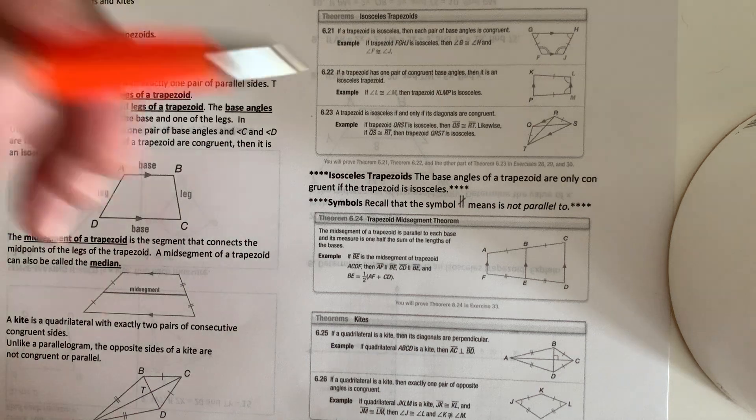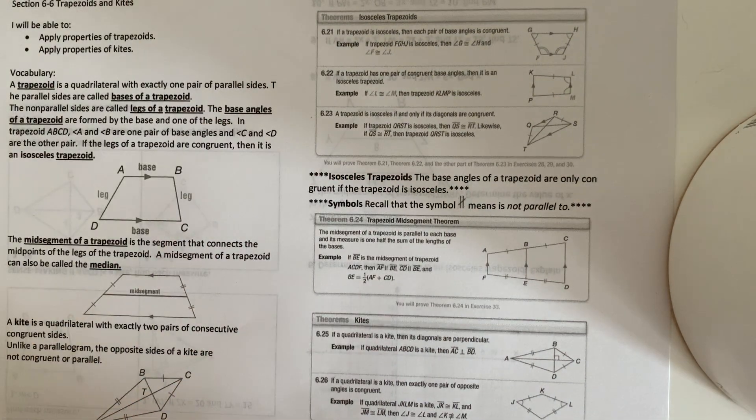Recall that the symbol with the two lines and a cross through it means that they are not parallel to.